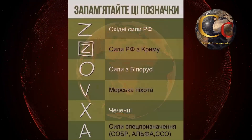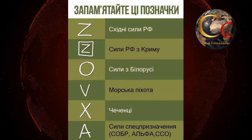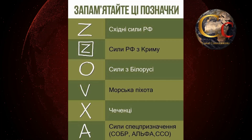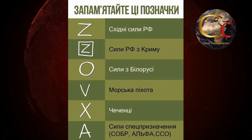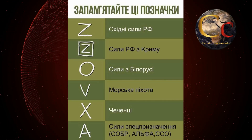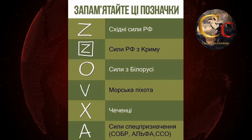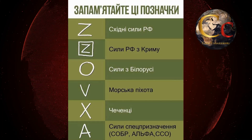Es por ello que los servicios de inteligencia han armado la siguiente tabla, que resulta totalmente incomprensible para quienes desconocen el ruso y el ucraniano.